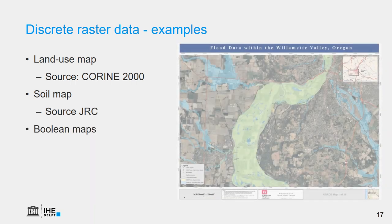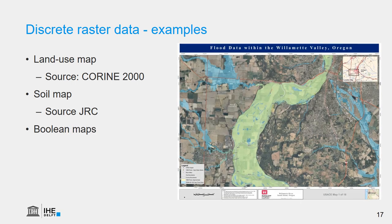Then we have the boolean maps. Here we see an example of flood data — in fact, these are two boolean maps on top of each other, which indicates flooded and non-flooded for two flooding episodes. In light green, we see a flooded area, and the non-flooded area is made transparent.